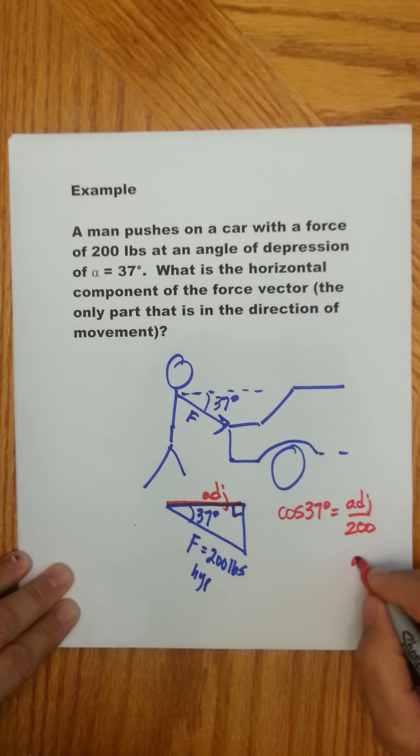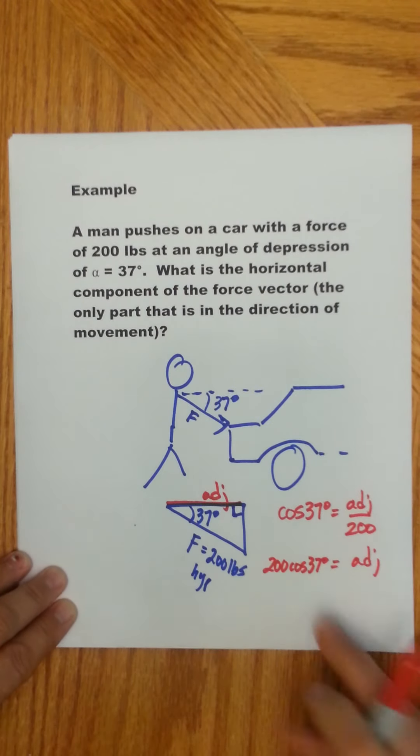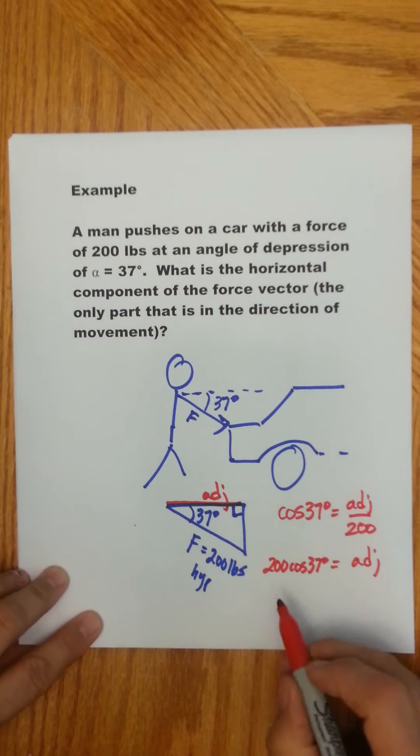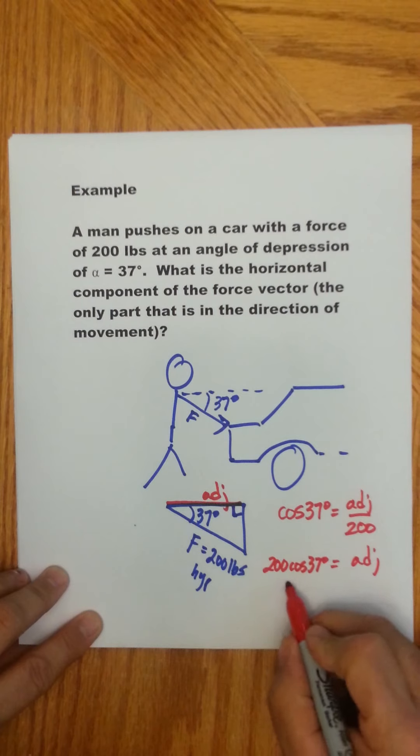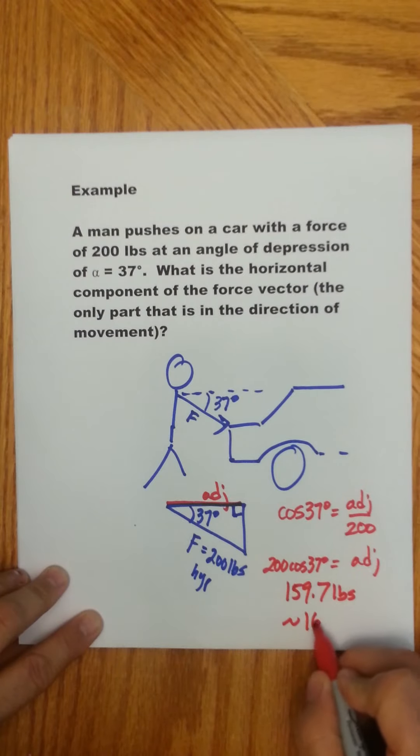Now we solve for the adjacent. That's 200 times cosine of 37 degrees. Be sure your calculator is in degree mode - it's easy to forget if you're going back and forth from radians to degrees. When you calculate this, you get 159.7 pounds, which you can round to about 160 pounds.